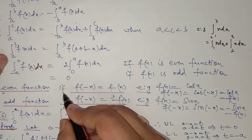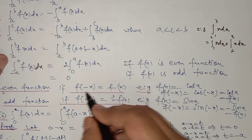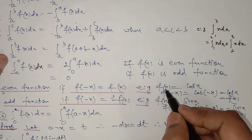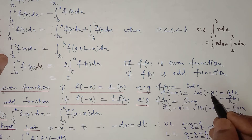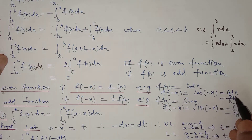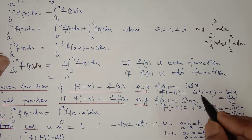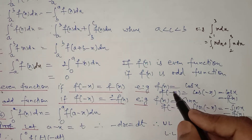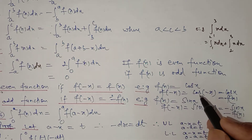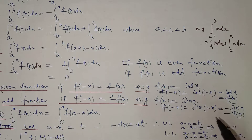Now, what is an even function? A function f(x) is said to be even if f(−x) = f(x). For example, if f(x) = cos x, then f(−x) = cos(−x) = cos x, because cosine is positive in the fourth quadrant. So f(−x) = f(x). Similarly, f(x) = x² is an even function because replacing x with −x gives (−x)² = x², so f(−x) = f(x).